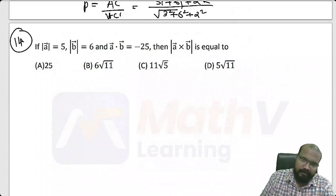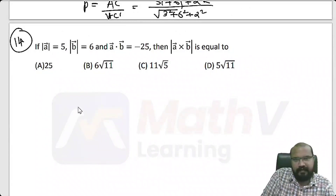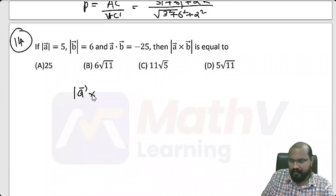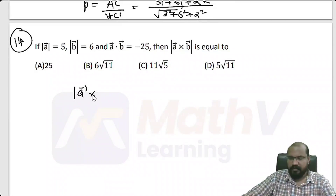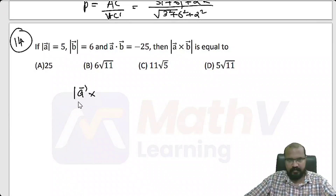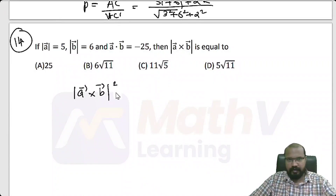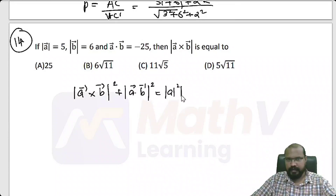The formula is: modulus of A cross B, the whole square, plus modulus of A dot B, the whole square, is equal to modulus of A squared into modulus of B squared.